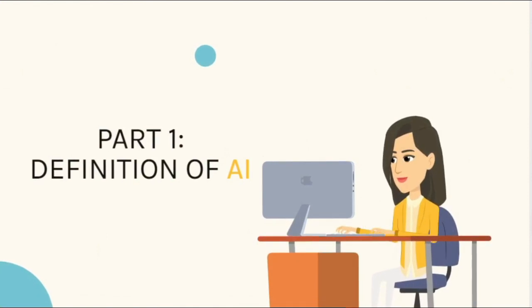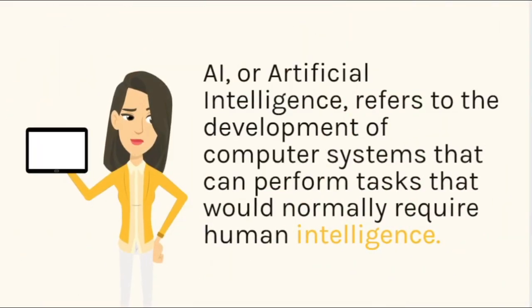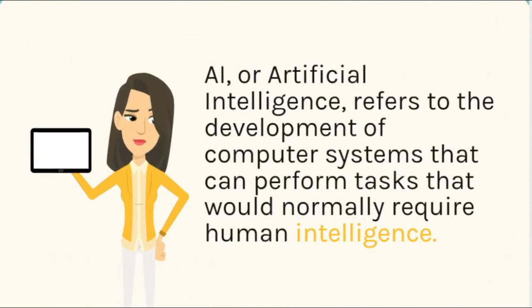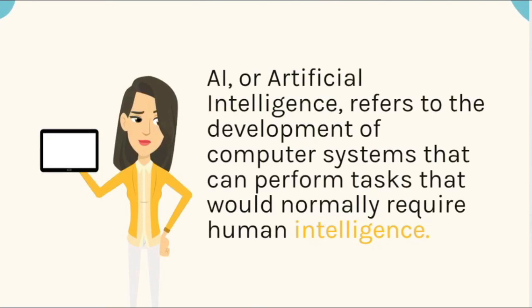Part 1: Definition of AI. AI, or Artificial Intelligence, refers to the development of computer systems that can perform tasks that would normally require human intelligence.